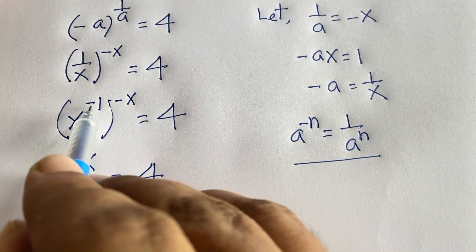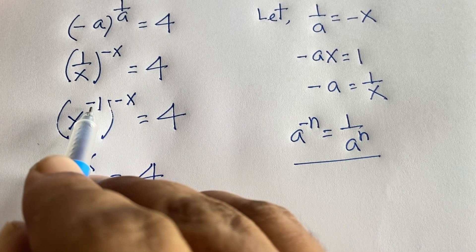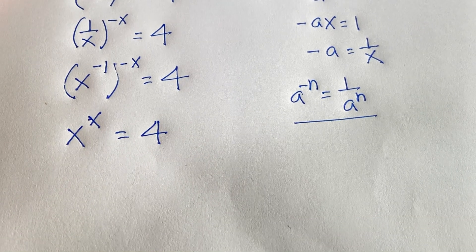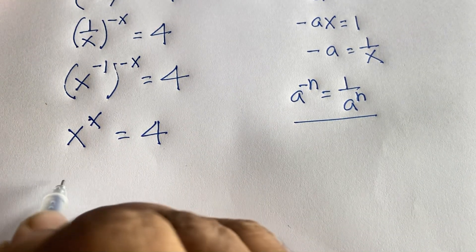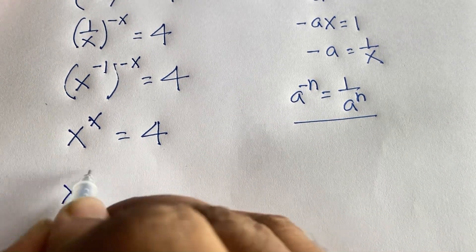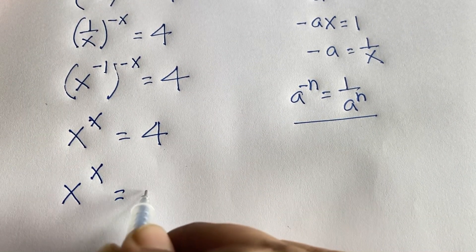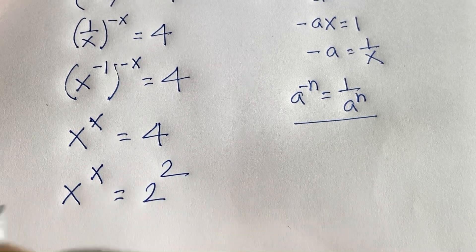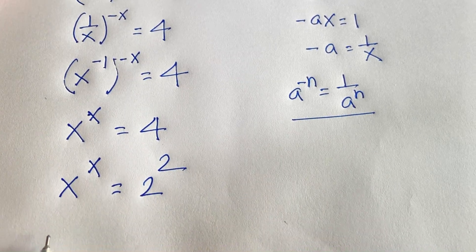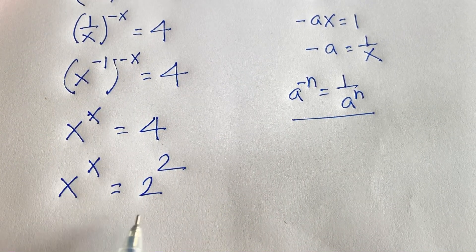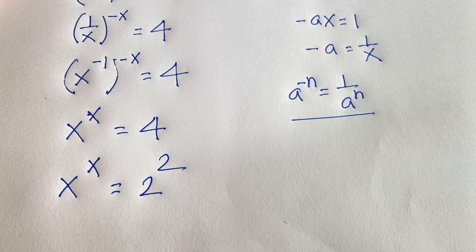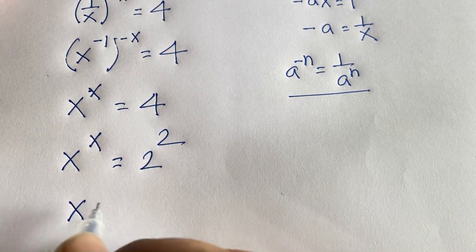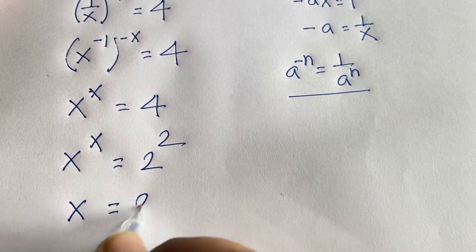According to exponential rules, minus 1 times minus x gives positive x. So we have x to the power x equals 4, and 4 can be written as 2 to the power 2. Here the base and exponent are the same on both sides, so we can say x is equal to 2.